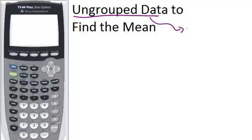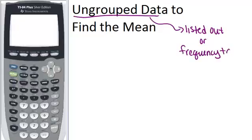Ungrouped data is either listed out for you so that you can see all the numbers in a list, or if there's a lot of duplication, the numbers might be in a frequency table that shows you how many times each of the same numbers were recorded.